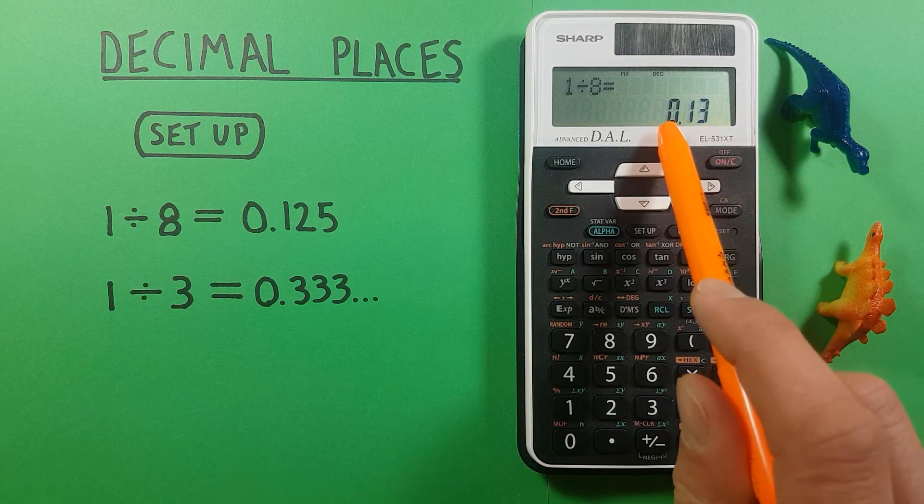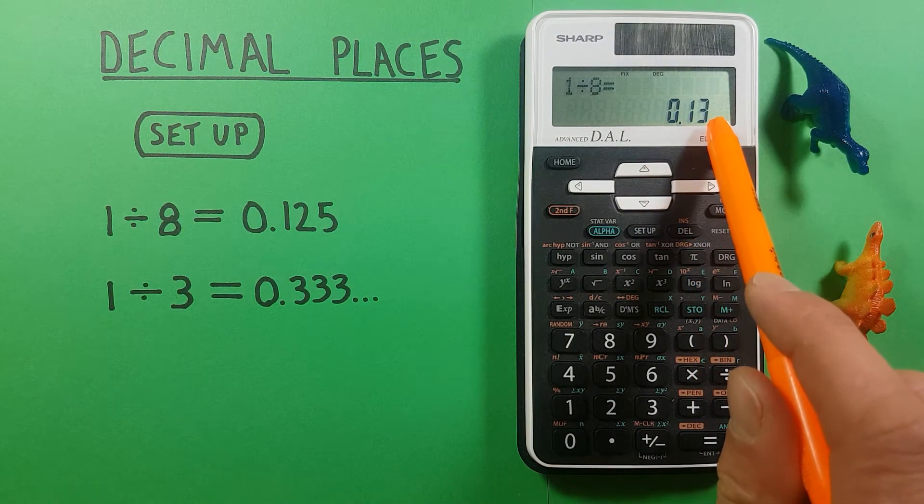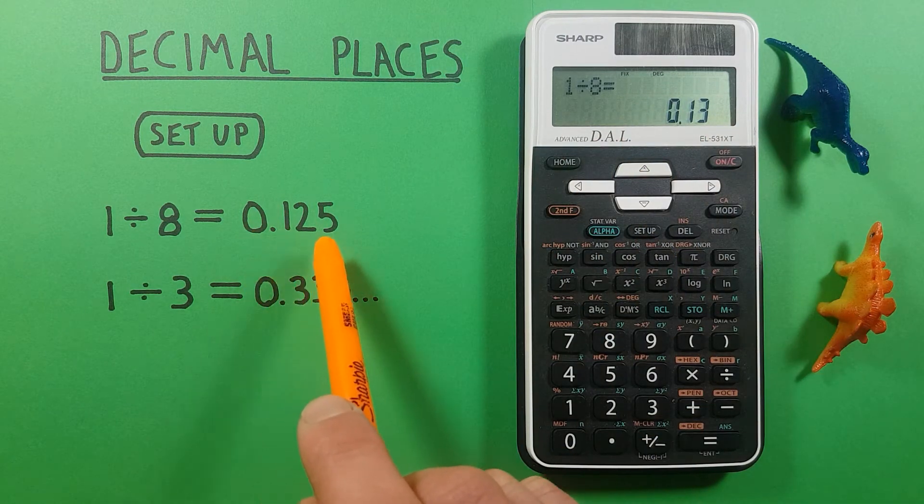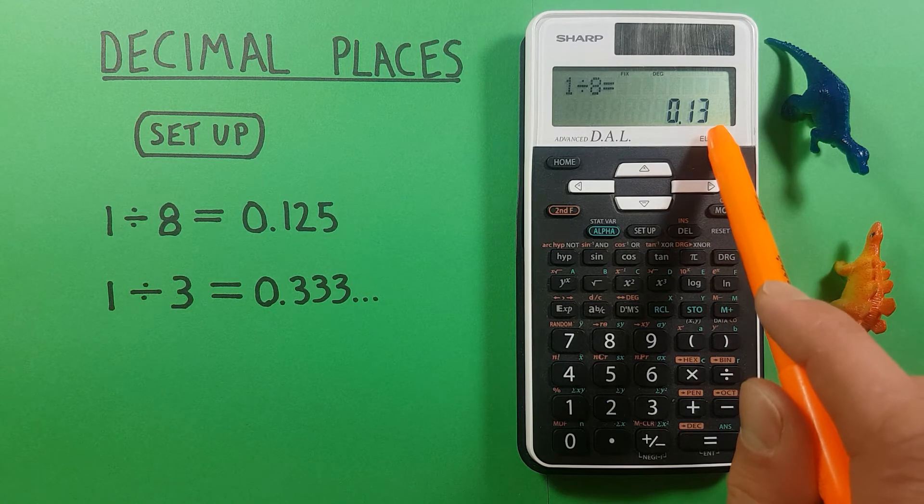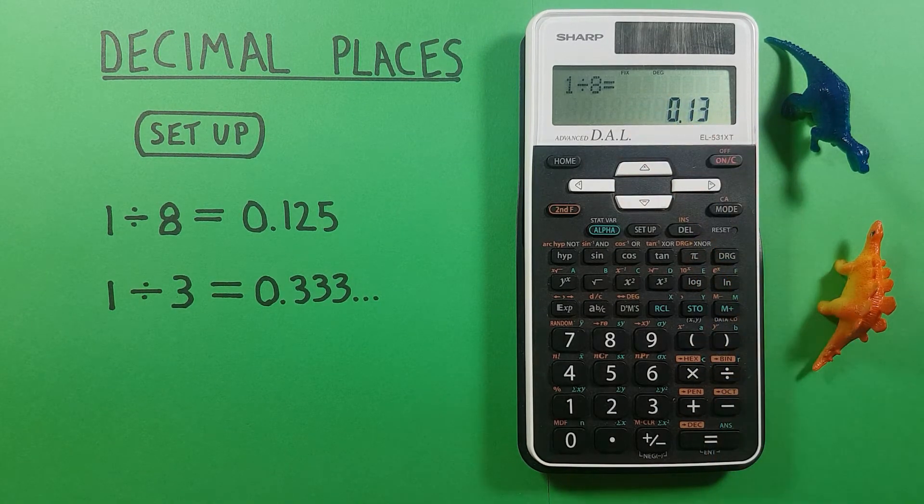Well for this example we want two decimal places so we'll press 2 and you can see now our calculator has changed to display two decimal places and our 0.125 has rounded to 0.13 because that's the rounded two decimal places there.